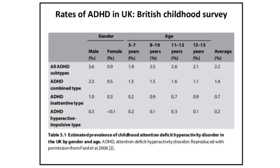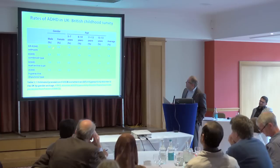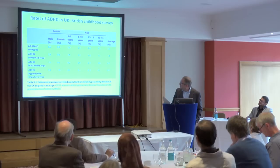In the UK, rates have traditionally been more conservative. The national survey by Ford, Goodman and colleagues using the Dawba interview found an overall rate of about 3.6% in males and 0.9% in females — lower than the average from other studies. The combined type is most common, then the inattentive type, while the hyperactive-impulsive subtype is quite rare. There are some age effects but prevalence remained quite persistent up to age 13 to 15, when the study stopped.